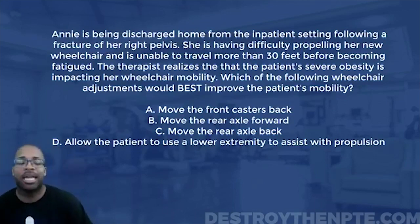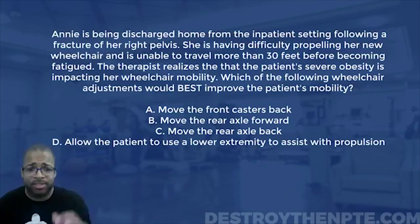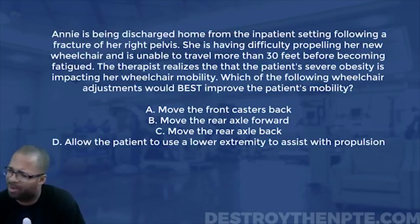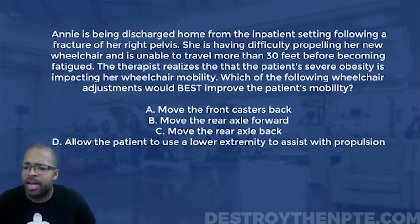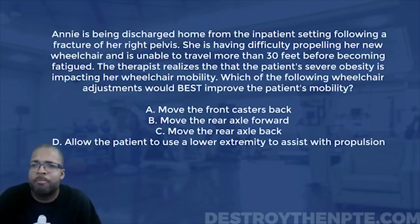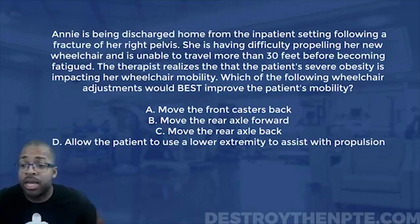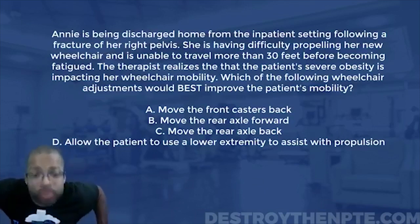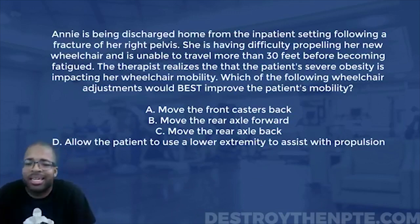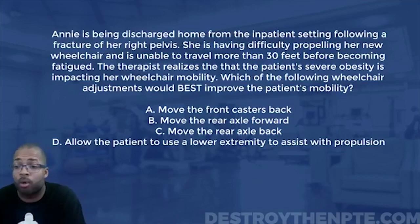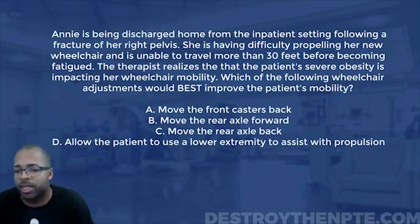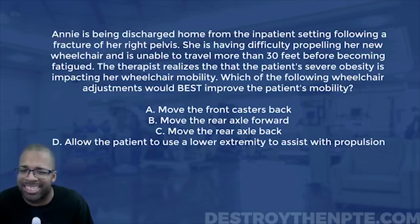C says move the rear axle back — we just spoke about why that's wrong. If you push that rear axle back, it's already difficult for the patient, but now imagine your body is pushed forward because of all that extra adipose tissue behind you. Your shoulders are sitting more forward, and you have to reach all the way back to get those wheels. It takes a lot more muscle energy, you have to displace more, causing more energy loss. C is not a good answer — it definitely doesn't trump B.